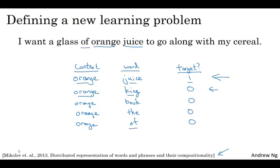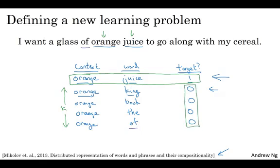So to summarize, the way we generated this data set is, we'll pick a context word, and then pick a target word, and that is the first row of this table. That gives us a positive example. So context, target, and then give that a label of one. And then what we'll do is, for some number of times, say, k times, we're going to take the same context word, and then pick random words from the dictionary. King, book, the, whatever comes out of random from the dictionary, and label all those zero. And those would be our negative examples. And it's okay if just by chance, one of those words we picked at random from the dictionary happens to appear in a window, in a plus minus 10 word window, next to the context word orange.